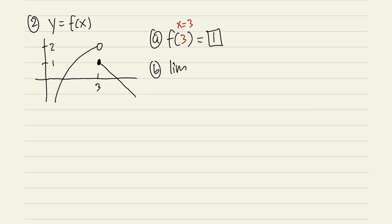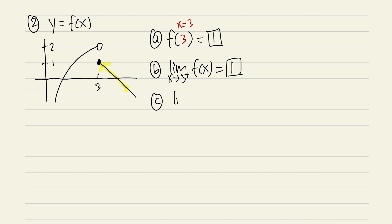For part b, the limit as x approaches 3 from the right-hand side: place your right index finger on the curve and move toward x = 3. You can see that the y value is approaching 1, so the answer is 1.